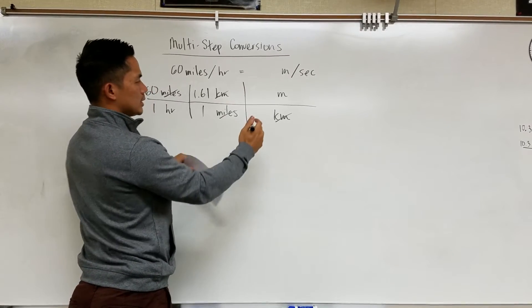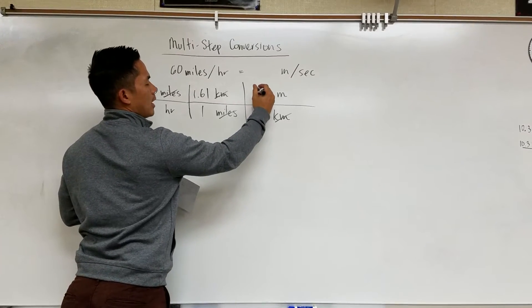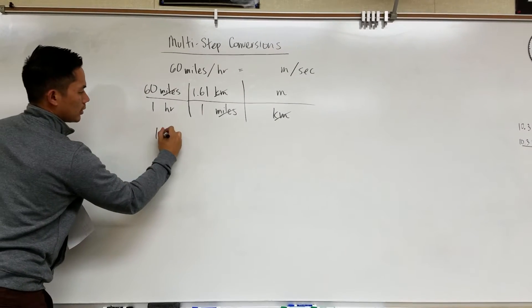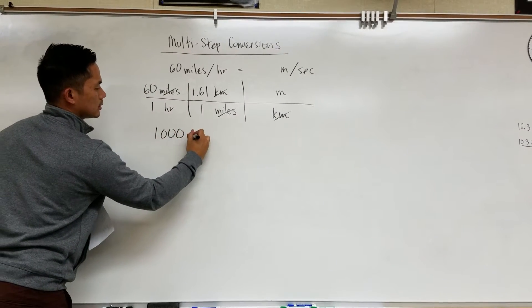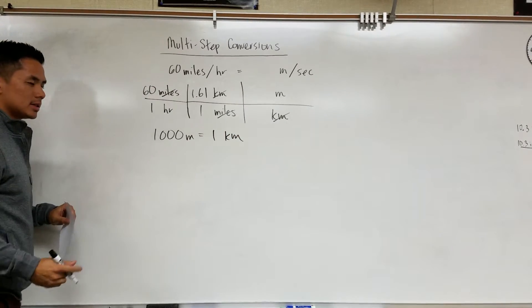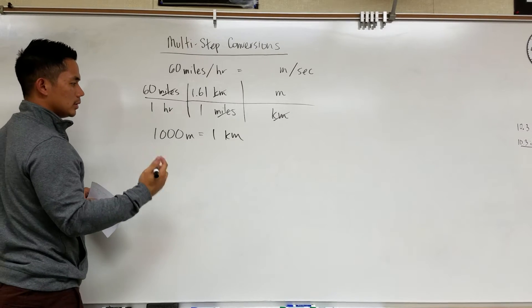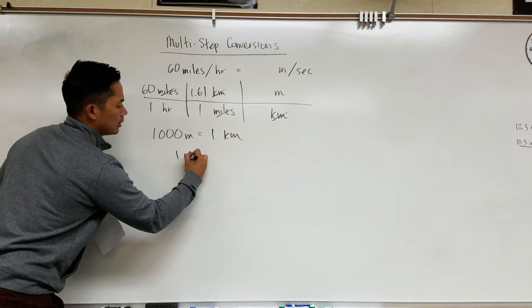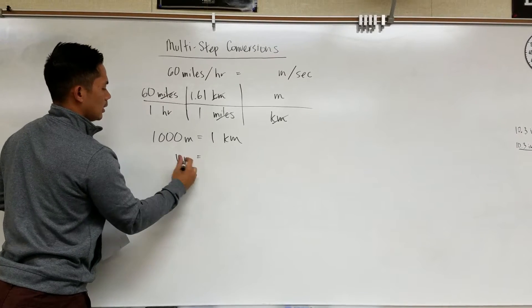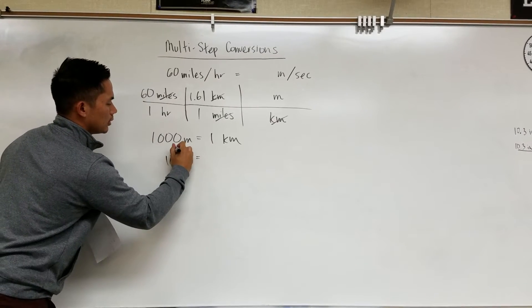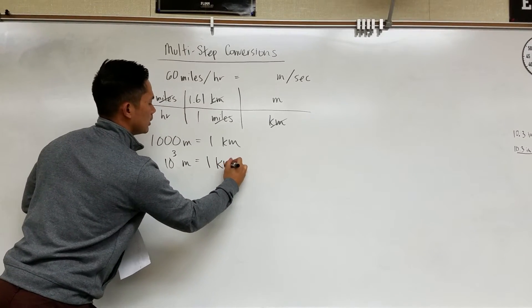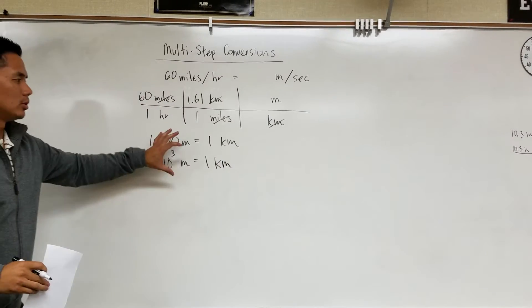And I know that there are 1,000 meters for every 1 km. In class I think we use for every 1 meter it's 10 to the 3rd meter for every 1 km.